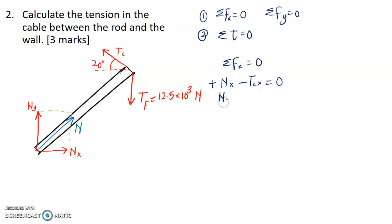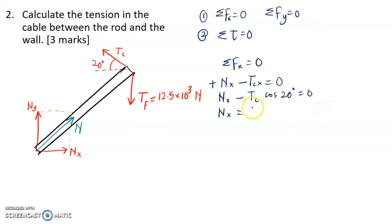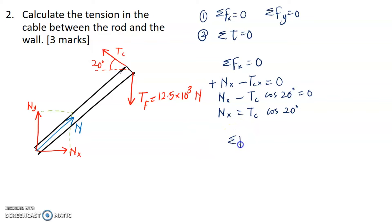We can write the full expression for Tcx: it is going to be negative TC multiplied with cos 20 degrees. We can also write this as NX equals TC cos 20 degrees. We cannot proceed further because we have two unknowns here, which are NX and TC. With that, we proceed to the second equation: find the total force along the Y component, which must equal 0.